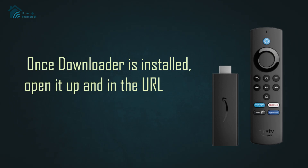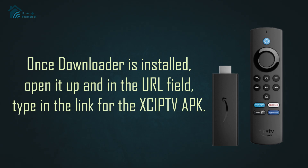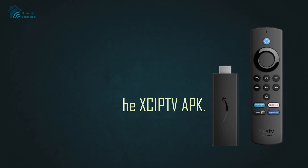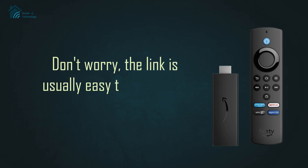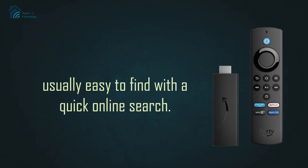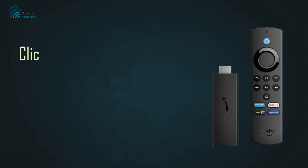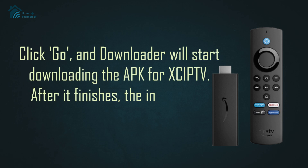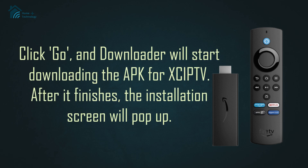Once Downloader is installed, open it up and in the URL field, type in the link for the XeIPTV APK. Don't worry, the link is usually easy to find with a quick online search. Click Go, and Downloader will start downloading the APK for XeIPTV.